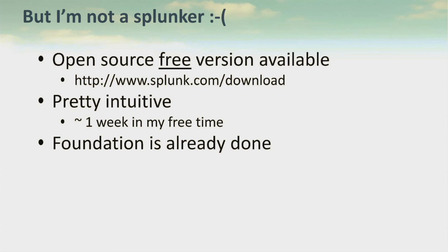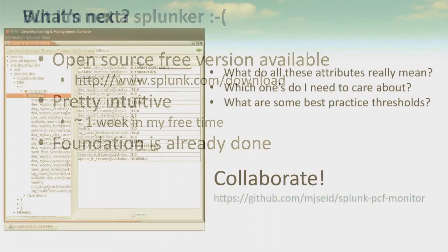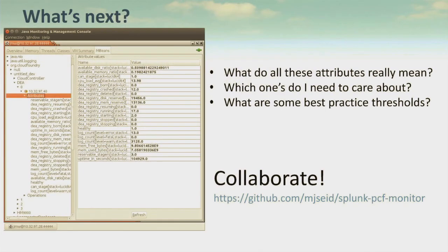The greatest news of all is I've already laid the foundation for you. What's next? Pivotal Ops Metrics exposes a whole bunch of metrics for all the components of your Cloud Foundry environment. What we need to know is what all these attributes mean, which ones to care about, and what thresholds to set in the alerts. I'd like to ask you to collaborate with me — go download the app from my GitHub page and let me know what you think. Thank you.